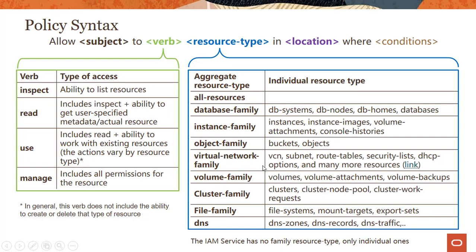If you want to go very granular within virtual network family, you could have VCN, subnets, route tables, and so on. The whole idea is you can be very granular and provide role-based access control. You can read more in the documentation about what specific resource types are available, what the individual resource types are, and how you combine the various verbs with these resource types.